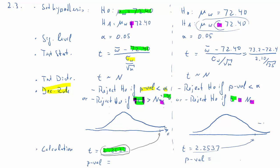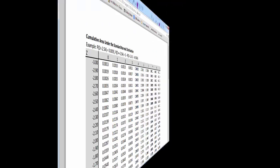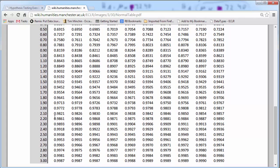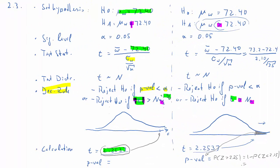Our test statistic is 2.25. Let me redraw these pictures. Here's the distribution for the two-tailed test, and here's the distribution for the one-tailed test. Starting with the one-tailed test: the test statistic falls out here in the right tail. The p-value is the area to the right of the observed test statistic — that gray area. Formally, it's the probability that a standard normal Z is larger than 2.25, which equals 1 minus P(Z < 2.25). From the standard normal table, P(Z < 2.25) = 0.9878, so the p-value is 1 − 0.9878 = 0.0122.